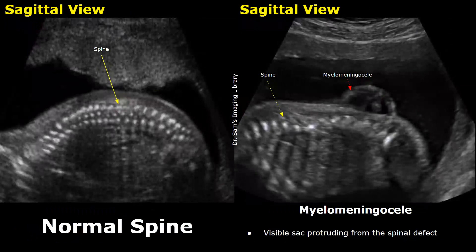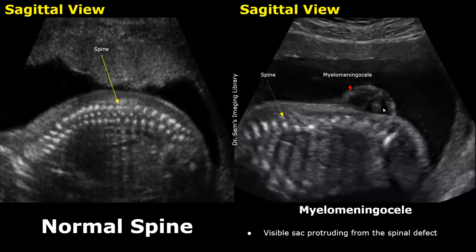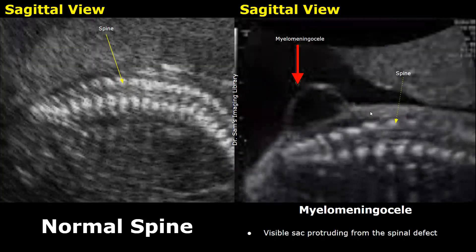Spinal defects are also seen. The image on the left is a sagittal view of a normal fetal spine. The image on the right shows a myelomeningocele — there is a defect in the spine which leads to protrusion or herniation of spinal contents through this defect, forming a myelomeningocele. The herniated contents are in a sac. This visible sac protruding from the spinal defect is a myelomeningocele, associated with Edwards syndrome. It commonly affects the lumbar region, although any region of the spine can be affected.